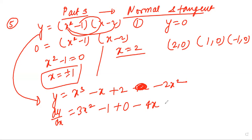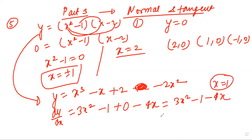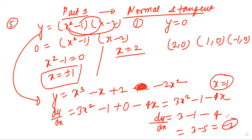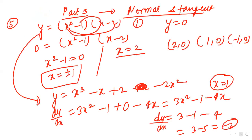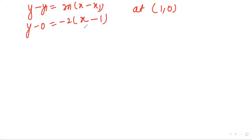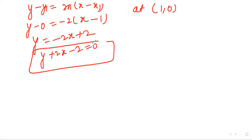Now put the value of x at point 1 comma 0. So this slope will be 3x squared minus 4x minus 1. Put x equal to 1, so dy/dx will be 3 minus 1 minus 4, so it will be minus 2. The equation of tangent is y minus y1 equal to m times (x minus x1). So putting point 1 comma 0 and slope minus 2: y minus 0 equal to minus 2(x minus 1), giving y equal to minus 2x plus 2. Arranged: y plus 2x minus 2 equal to 0.